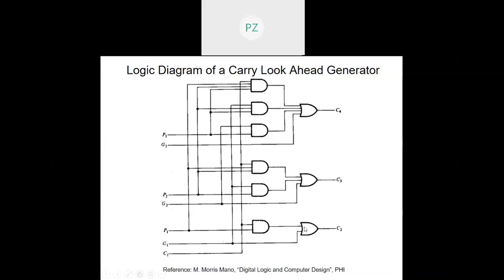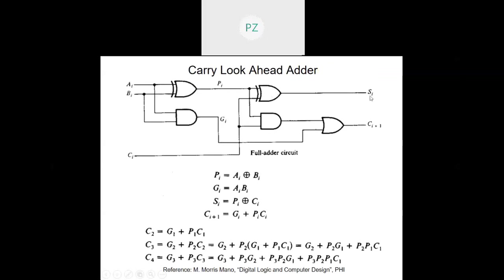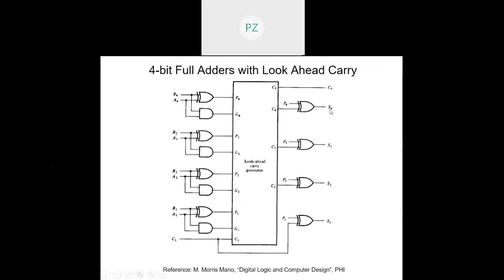When you combine c4 in an exclusive-OR with p4 you get s4; c3 exclusive-OR p3 gives s3; c2 exclusive-OR p2 gives s2; and c1 exclusive-OR p1 gives s1 — because si = pi exclusive-OR ci. We have generated the carry by looking ahead of time. The problem is that the design is no longer modular: as you add more bits the equations grow larger and the circuit becomes more complex.